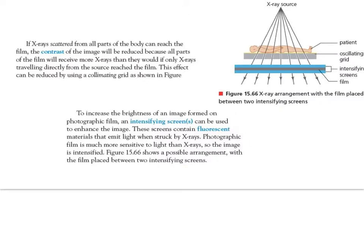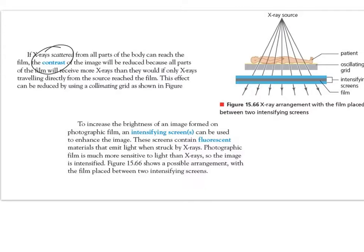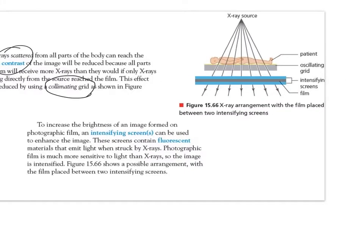Reflection is another thing that causes blurry pictures. You can increase the contrast of an image by using something called a collimating grid. A collimating grid basically absorbs all the stray x-rays that are flying around that you don't need. Here's our x-ray source — as it shines on the patient, the collimating grid absorbs any ray that's not directly going into the film. So you only get a picture formed from the x-rays that go through the body into the film, with no reflection from any other surface.